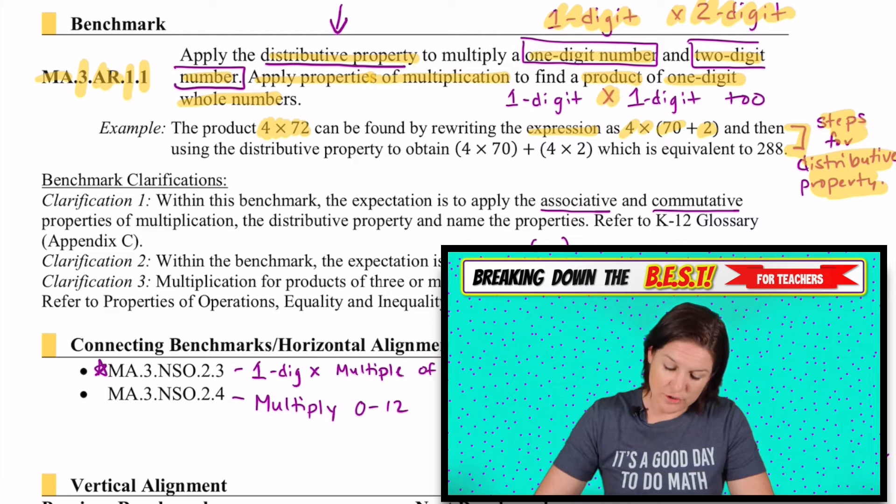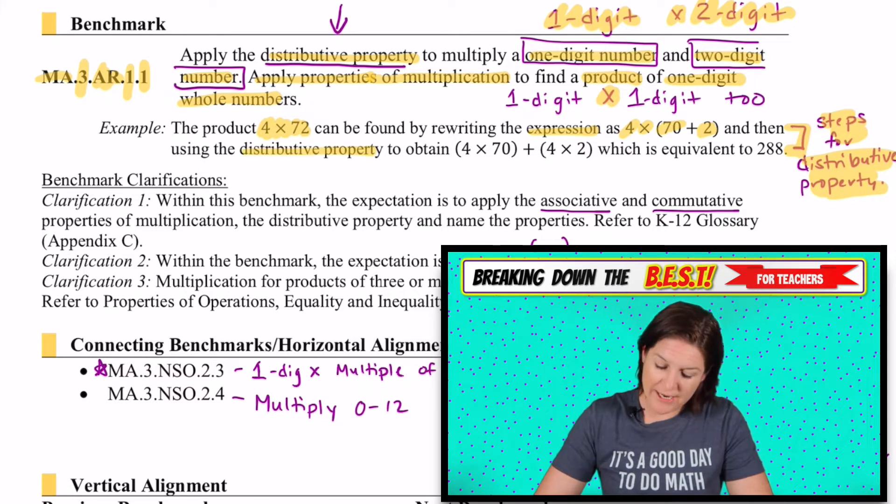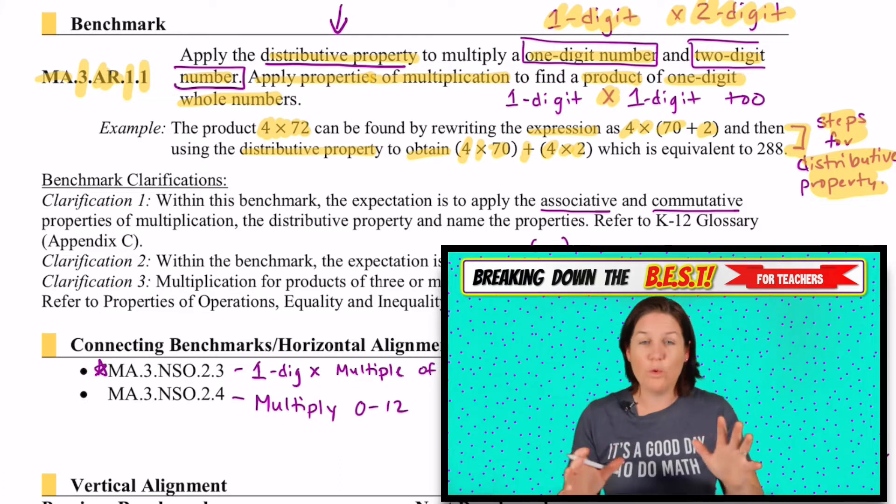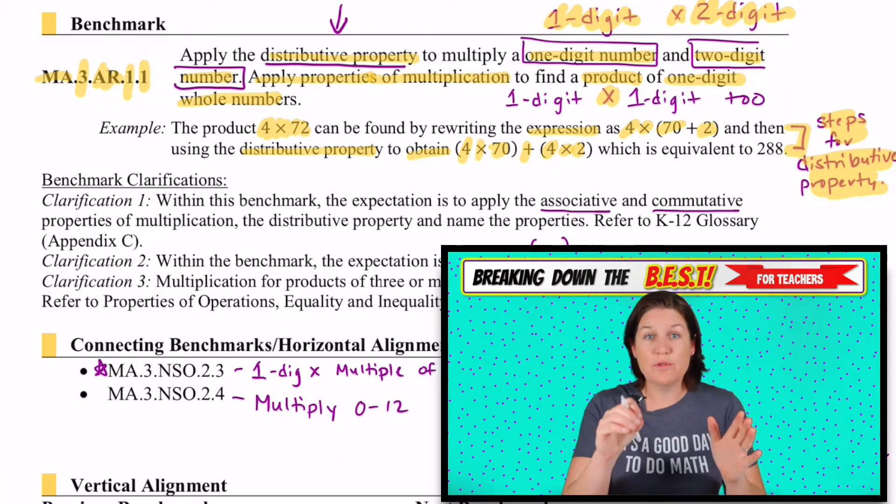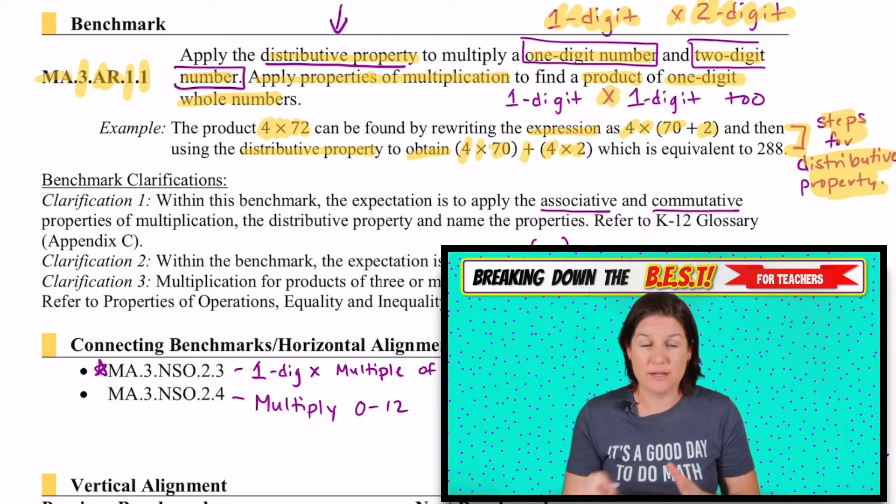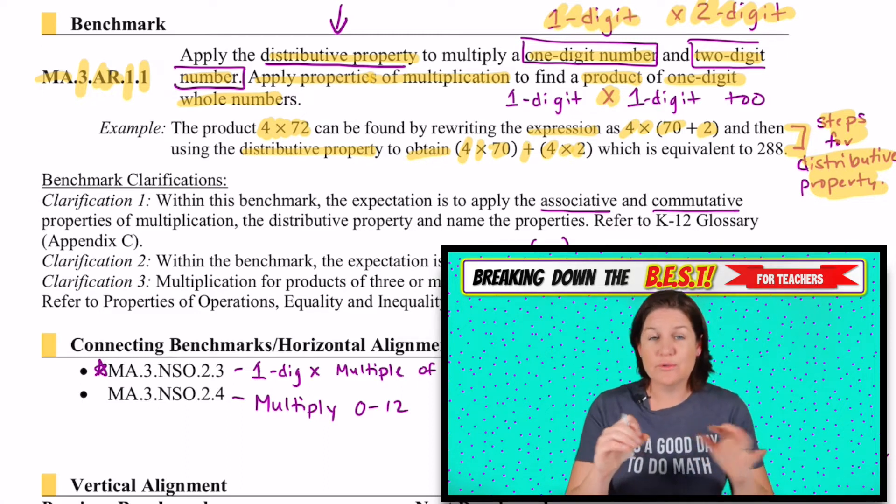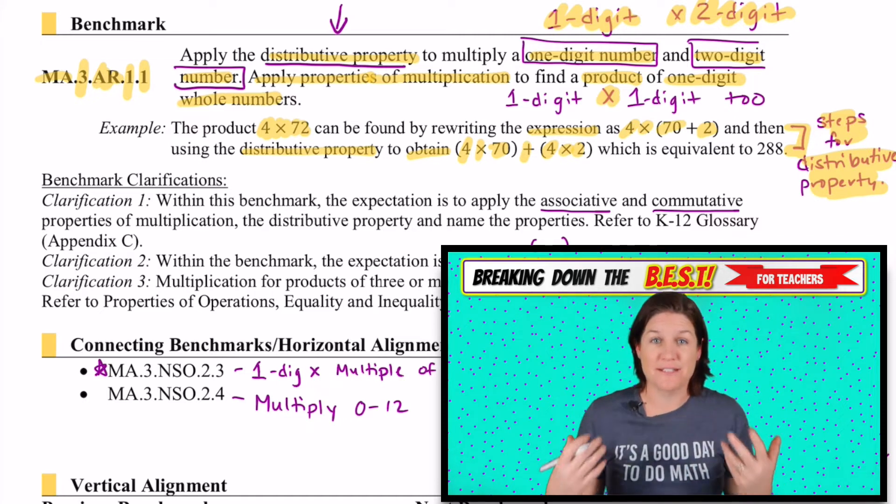So then we could use the distributive property to obtain, it's a fancy word, to obtain four times 70 plus four times two. Basically, we're taking that four, the factor that we did not break down and we're distributing it with the factor that we did break down four times 70, four times two and adding them together.